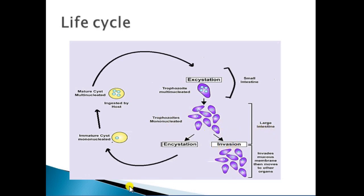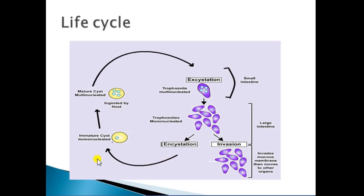In the large intestine, the trophozoites invade the intestinal wall, leading to ulcerations. The ulcers are large and flask-shaped. These trophozoites can even move towards other organs. During this infection, bloody mucous-containing diarrhea occurs with lower abdominal discomfort. Some of the trophozoites undergo encystation and are converted into mature cysts, which are then passed out with the stool. These mature cysts in the stool can further act as a source of infection.